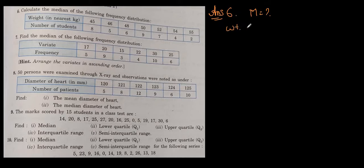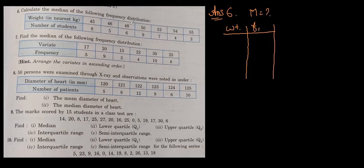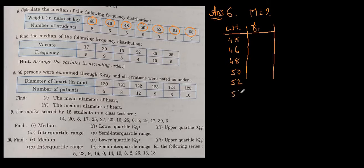We will write down weight and the number of students, which will be my frequency. The criteria is you have to write down in ascending order. So the weights are 45, 46, 48, 50, 52, 54, and 55 — already in ascending order, so no need to rearrange. The frequencies (number of students) are 8, 5, 6, 9, 7, 4, and 2.